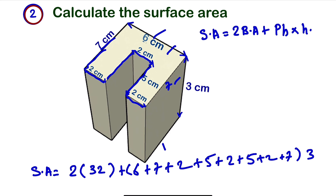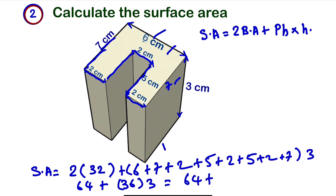Adding all the perimeter sides together gives us 36. So we have 64 plus 36 times 3, which is 64 plus 108. Adding them up, we get a surface area of 172 centimeter square.